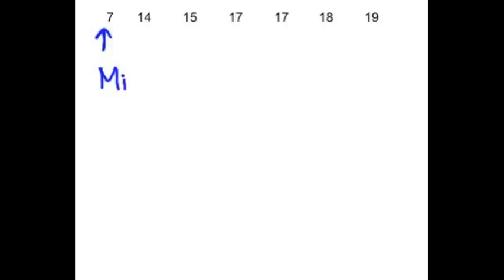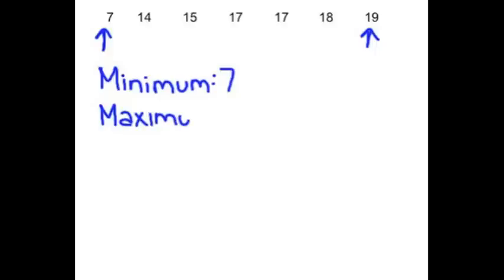Let's find out the five number summary. The minimum is the lowest number in the set, so the minimum here would be 7. The maximum is the highest number in the set, so the maximum is 19. In the previous problem, we found the median to be 17.